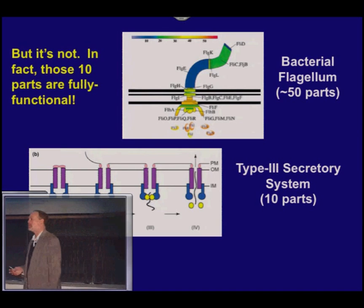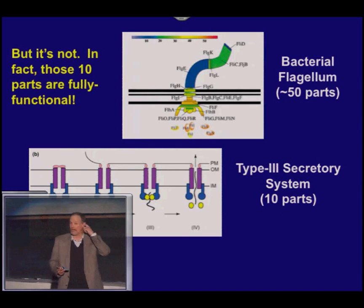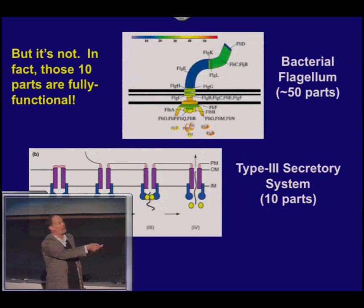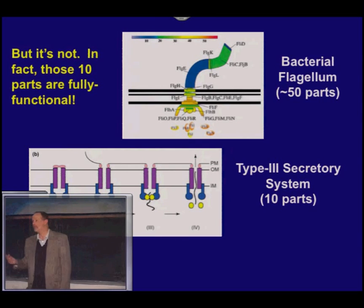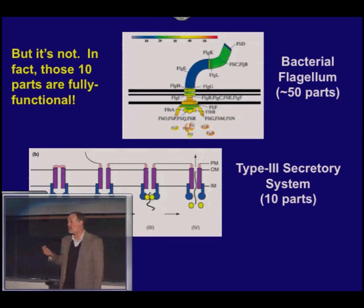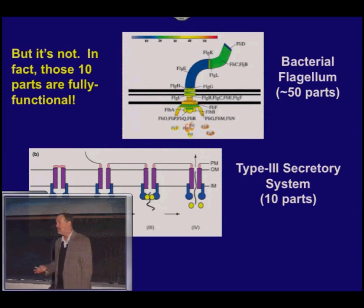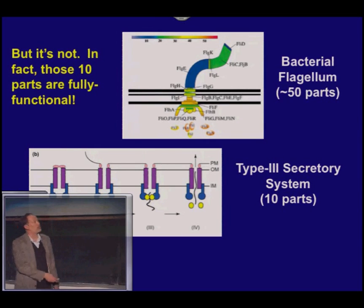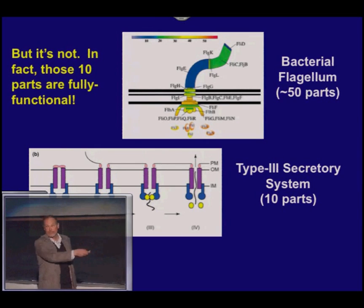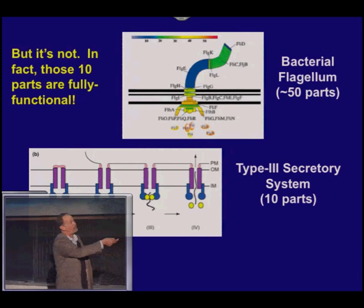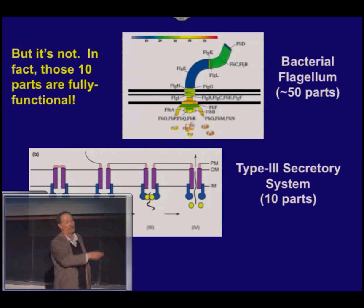The Type 3 Secretory System is a kind of molecular syringe. Bacteria use this to hook up to one of our cells and pump proteins into them. Those proteins are called virulence factors, and they kill the cells they're pumped into. Some of the nastiest bacteria on this planet — Yersinia pestis, for example, which causes bubonic plague — is a Type 3 secretor. It gets inside your body, pumps your cells full of poison, and kills them. That's why it kills tissue so quickly.